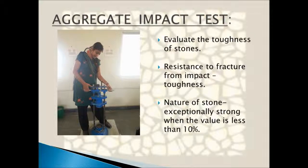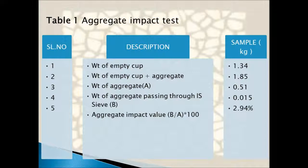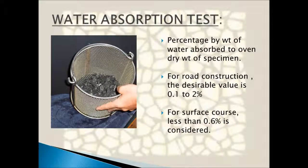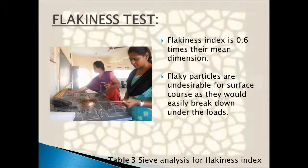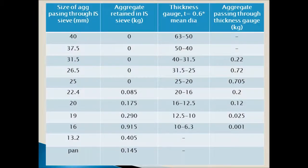For sample preparation, take the required amount of bitumen and aggregate and heat them in an oven. Mix the aggregate, filler, and bitumen at a temperature of 160 to 170 degrees Celsius inside the oven. Place the mixture in the bitumen compactor mold and give about 50 to 75 blows. Place the mold in the water bath at 60 degrees Celsius for 30 to 40 minutes. Measure its dimensions and weight in air, then take the sample for Marshall testing and note down the Marshall stability and flow values.